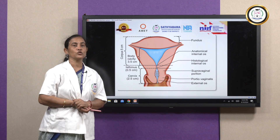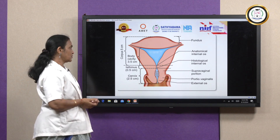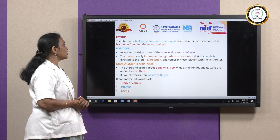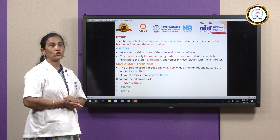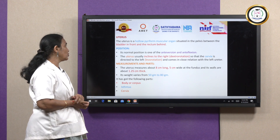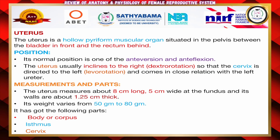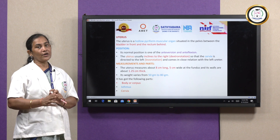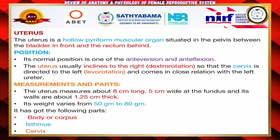We should know the normal measurement of the uterus, body, and cervix. The uterus is a hollow pyriform muscular organ situated in the pelvis between the bladder anteriorly and the rectum posteriorly. Its position is anteverted and anteflexed. The uterus is usually inclined to the right, called dextrorotation, and the cervix is directed to the left, called levorotation. The measurement is 8 × 5 × 1.25 cm — 8 is length, 5 is breadth, and 1.25 cm is thickness. In the non-pregnant state the uterus weighs 50 to 80 grams, and when pregnant it comes to 1000 grams.